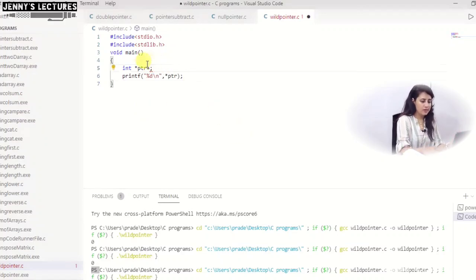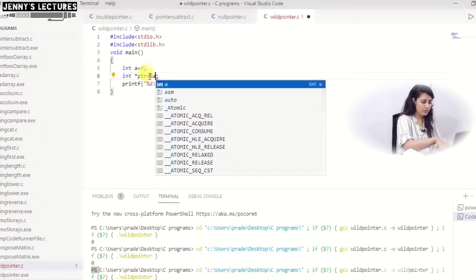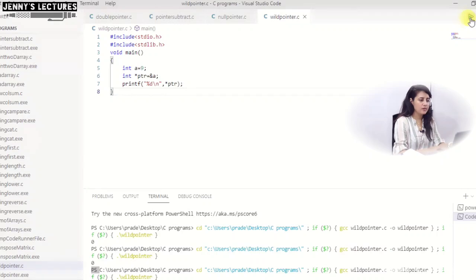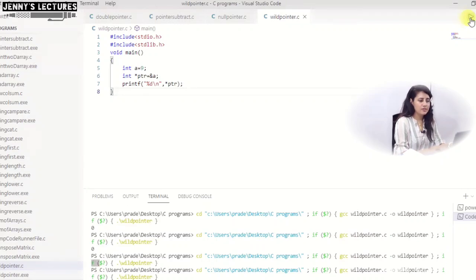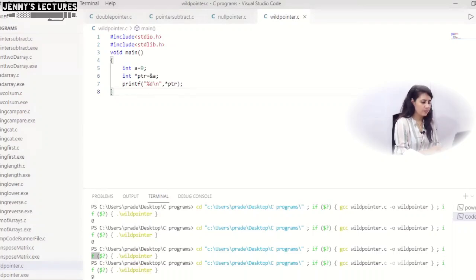So now you can make it null, or in starting only maybe you can take any variable like int a is equal to 9, and you can initialize this pointer int star ptr is equal to address of a. And now if you will dereference it, it should give you 9 because value of a is 9. See it is printing 9.